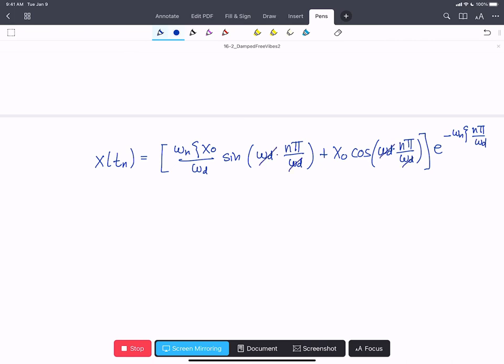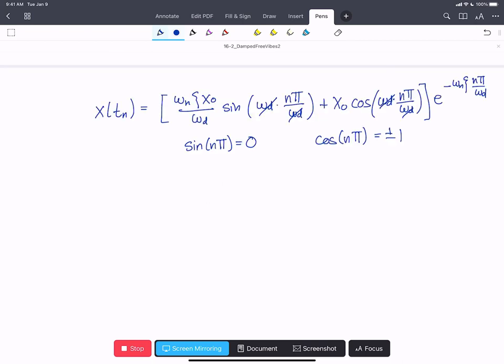Our omega d's cancel here, and we'll note that sine of n pi equals zero, and cos at n pi is always going to be equal to plus or minus one. So we can write our equation again. We've got x of tn equals zero plus x naught, we'll say it's one, e to the minus omega n zeta n pi over omega d.